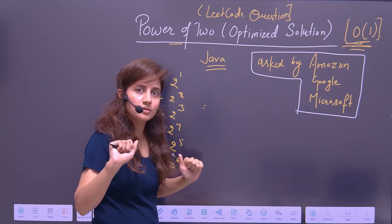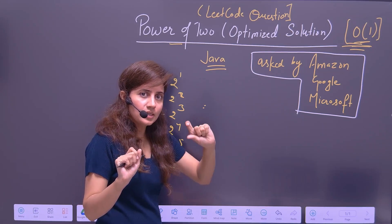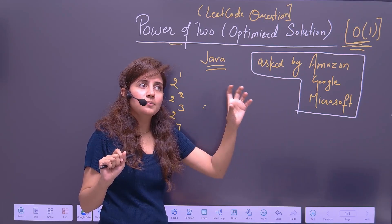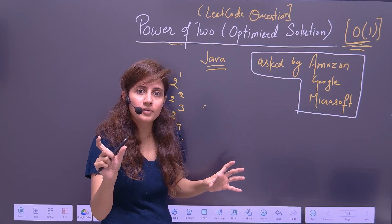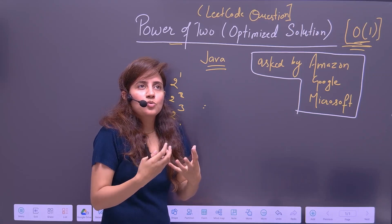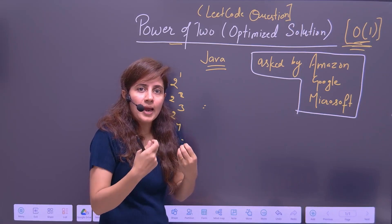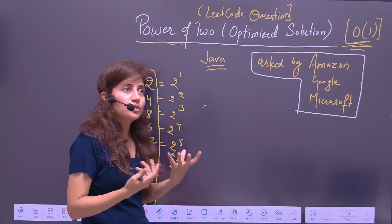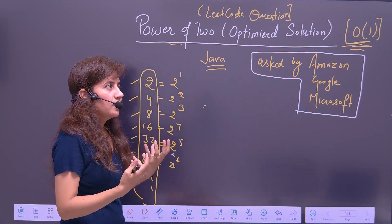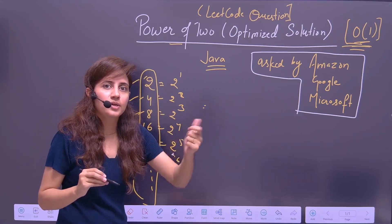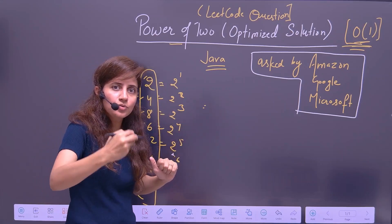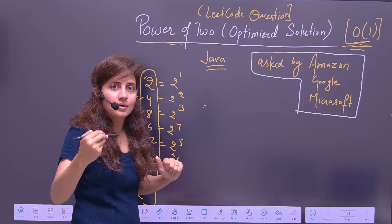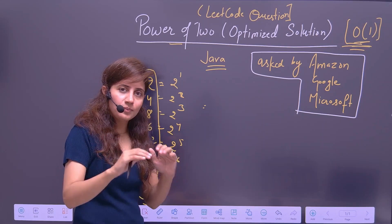How to think about this? First, understand the problem — power of two. Write down what the numbers which are power of two are. You have to use bitwise operators, which work on individual bits. So convert these numbers into binary representation, connect the dots, and you will find some pattern and be able to solve it.